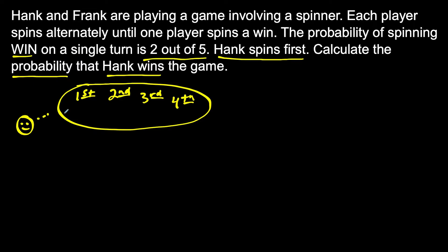How would Hank win on the first round? The probability of Hank winning the first time is two out of five. We also have to consider the possibility that Hank wins on the second round, but for that he needs to not win on the first round. So what's the probability of Hank not winning on the first spin? That would be three out of five.